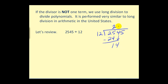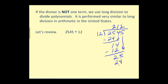So how many 12s in 14? That would be 1. 1 times 12 would be 12. We subtract and bring down the 5 — this is our last digit, so this is our last cycle. How many 12s in 25? That would be 2. 2 times 12 is 24, with a remainder of 1. So we can rewrite this as 212 and 1/12 — write the remainder over the divisor.